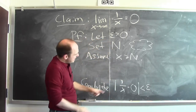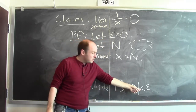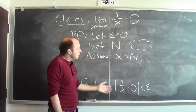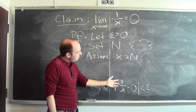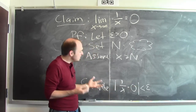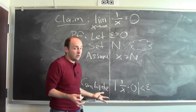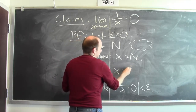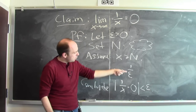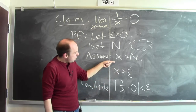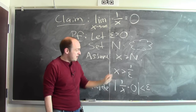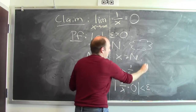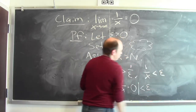One way to think about this is to work backwards. I want 1 over x to be close to 0. I want 1 over x to be less than epsilon. So what might I want? If I want 1 over x to be less than epsilon, that's really the same thing as saying that I want x to be bigger than 1 over epsilon. If I knew that x were bigger than 1 over epsilon, then 1 over x would be smaller than epsilon.